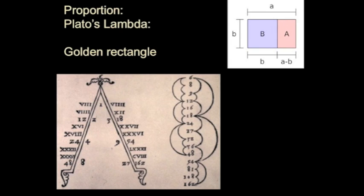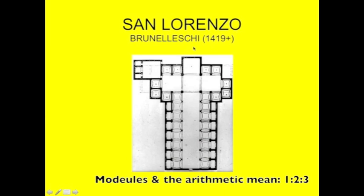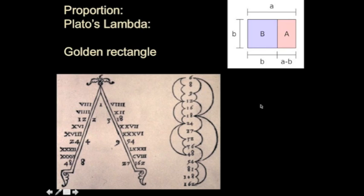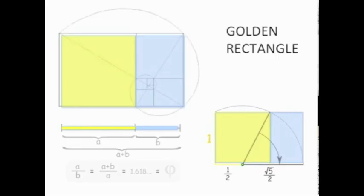It was a period when some of the ambitions of the earlier Renaissance — this interest in proportion that we already saw with Brunelleschi — become more elaborated. So instead of simply having a proportional system based on the arithmetic adding together of modules, there's an increasing interest in complex proportional systems. This is just the golden rectangle, which shows you the system whereby if you take a diagonal from the midpoint of a square to its corner and swing it down, you get a rectangle that creates this kind of endless spiral of nested similar proportions.